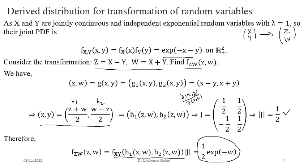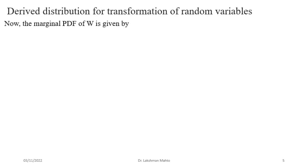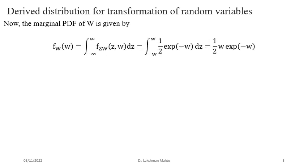Now we want to find the marginal PDF of W. Using the principle of marginalization, we integrate the joint distribution over Z from minus infinity to infinity. But we must focus on the variability region of Z — that is, the region where the joint density function is non-zero. We know f(x,y) is non-zero only in the first quadrant, where x ≥ 0 and y ≥ 0.